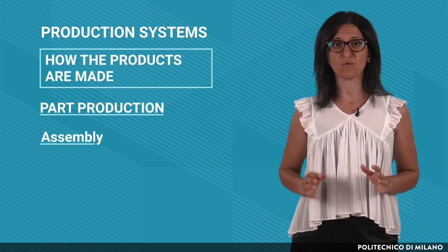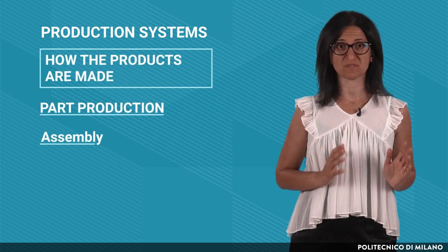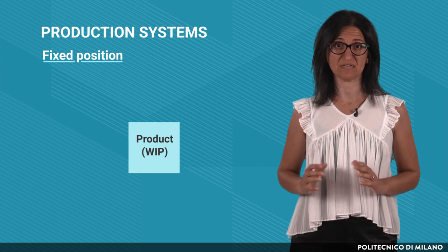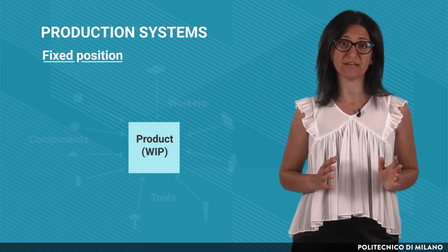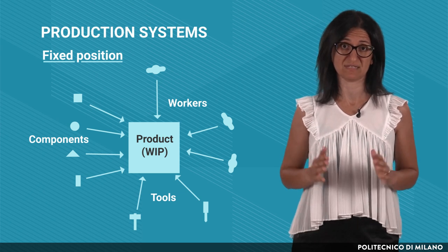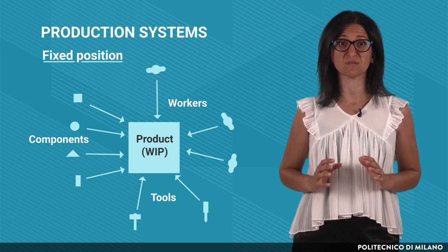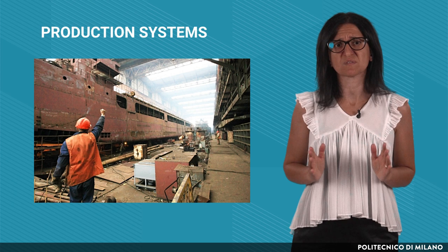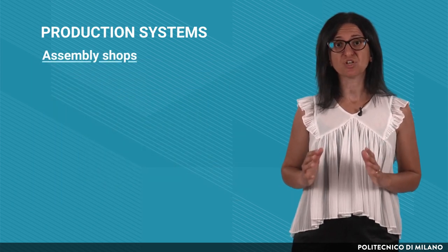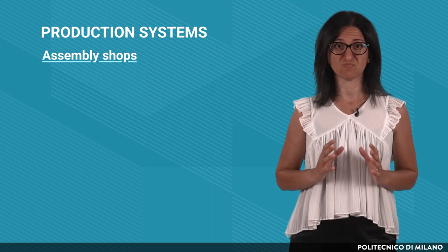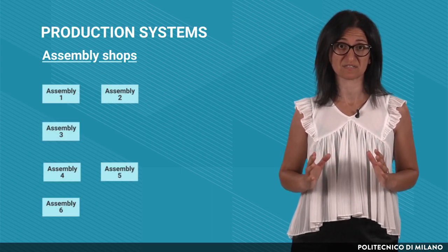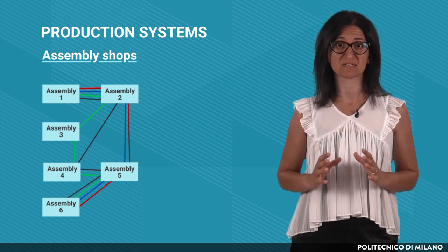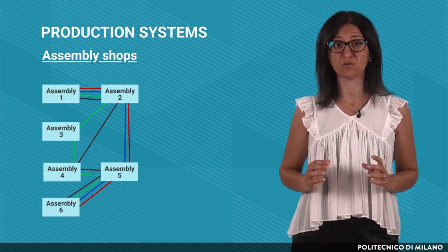As for the assembly phase, we can have three main solutions: fixed position, assembly shops and assembly lines. In the fixed position assembly, the product does not move, while components, tools and workers converge on the assembly site. This solution is suitable for assembling big and heavy objects, like aircrafts and boats, producing small volumes. Assembly shops are similar to job shops, since the products move through several assembly centers with different routings. They can be used to assemble a mix of similar products in small-medium volumes, for example, top-level cars.